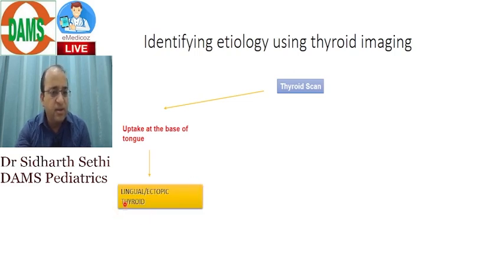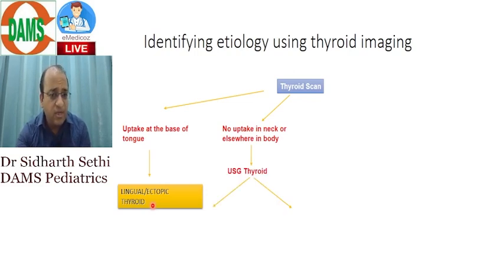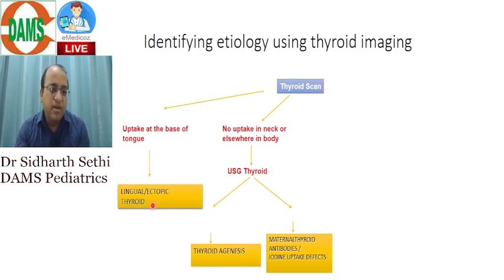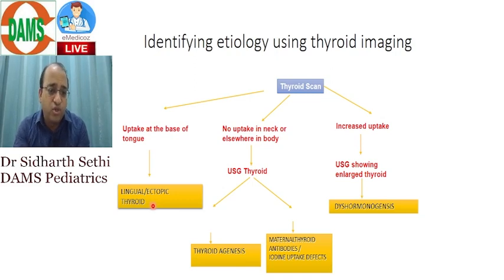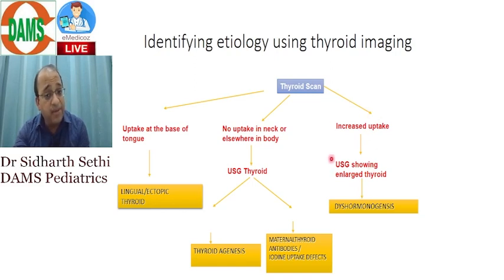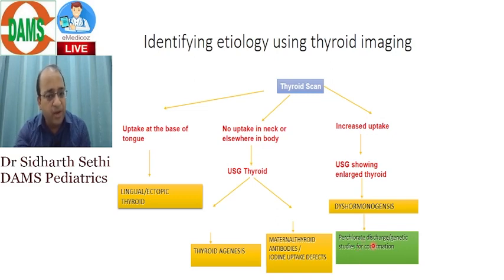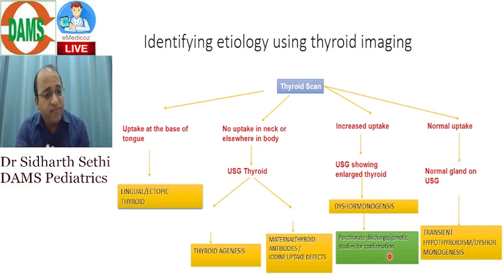On the thyroid scan: if there is uptake at the base of the tongue, it is lingual thyroid. If there is uptake nowhere, get an ultrasound to assess whether the baby has agenesis or if the cause is maternal thyroid antibodies or iodine uptake defects. If there is increased uptake with an enlarged thyroid gland yet the baby has hypothyroidism, think about dyshormogenesis — confirmed by a perchlorate discharge test or genetic mutations.